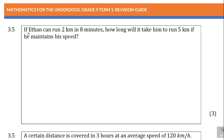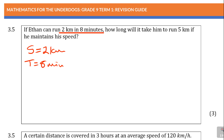Distance and time. It says: if Ethan can run 2 kilometers in 8 minutes, how long will it take him to run 5 kilometers if he maintains his speed? Let's underline the key things. The distance is 2 kilometers — already in the right unit, kilometers. The time is 8 minutes, but we want to work in hours, so we need to change those minutes to hours.